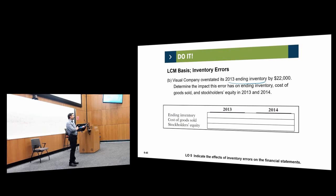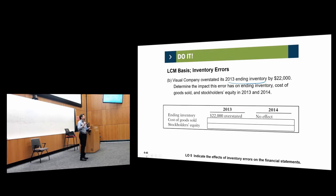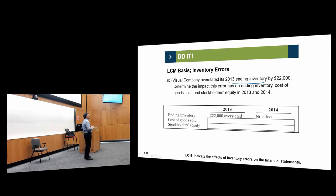In 2014, ending inventory will have no effect, because the ending inventory in 2014 depends on the actual physical count at the end of 2014. Unless you make another mistake, you assume that ending inventory will be correct. So it has no effect on 2014. What about cost of goods sold in 2013?